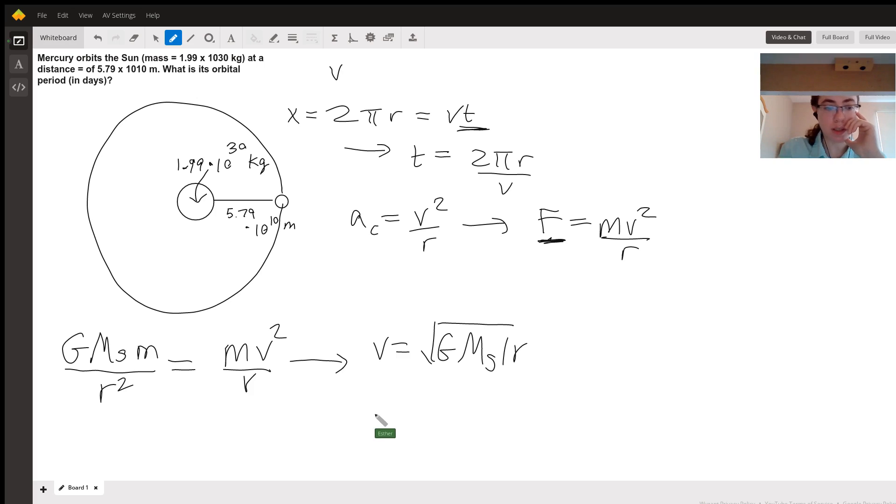And so let's see if I can move the board over here. Looks like I can. So we'll have to get ourselves some more space. So since we have the velocity, we're going to use this equation that we established earlier to set up an expression for our period. So that tells us t equals 2πr over root G m solar over r.